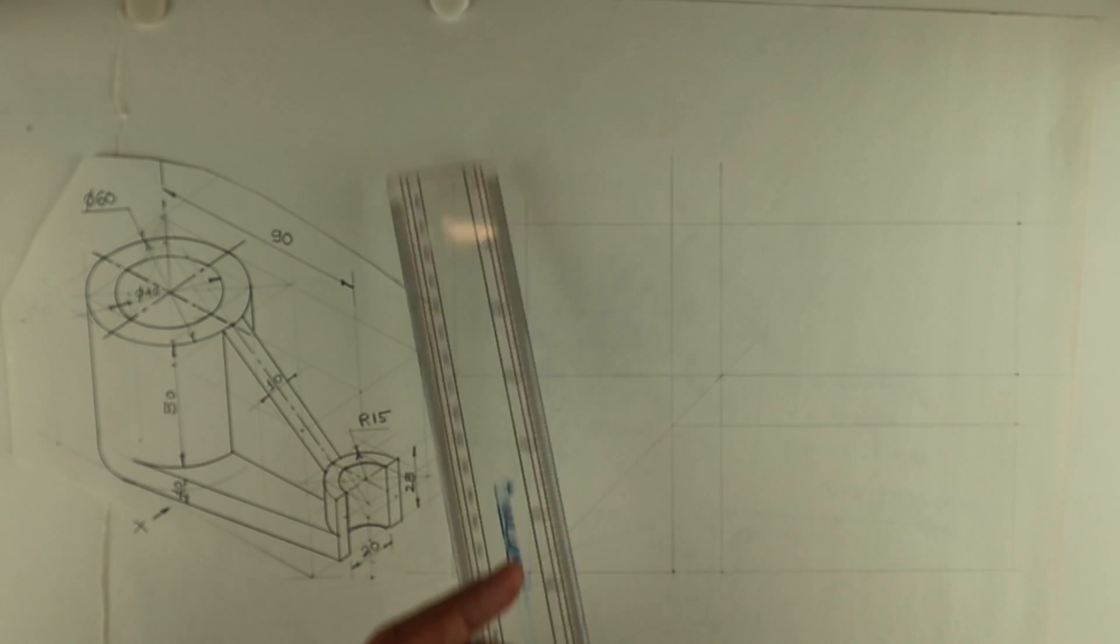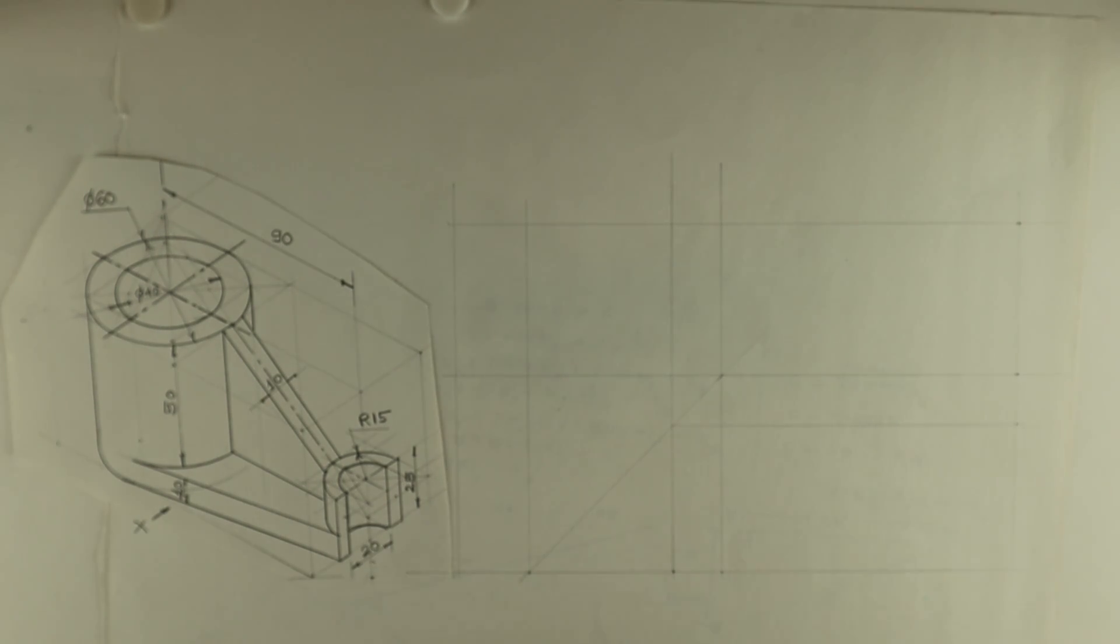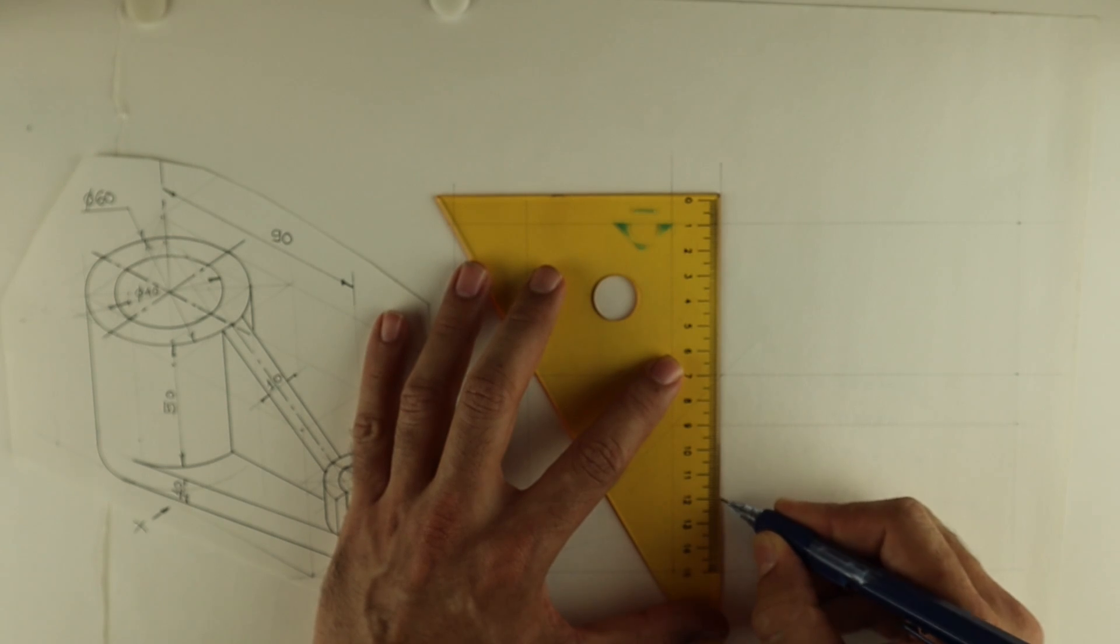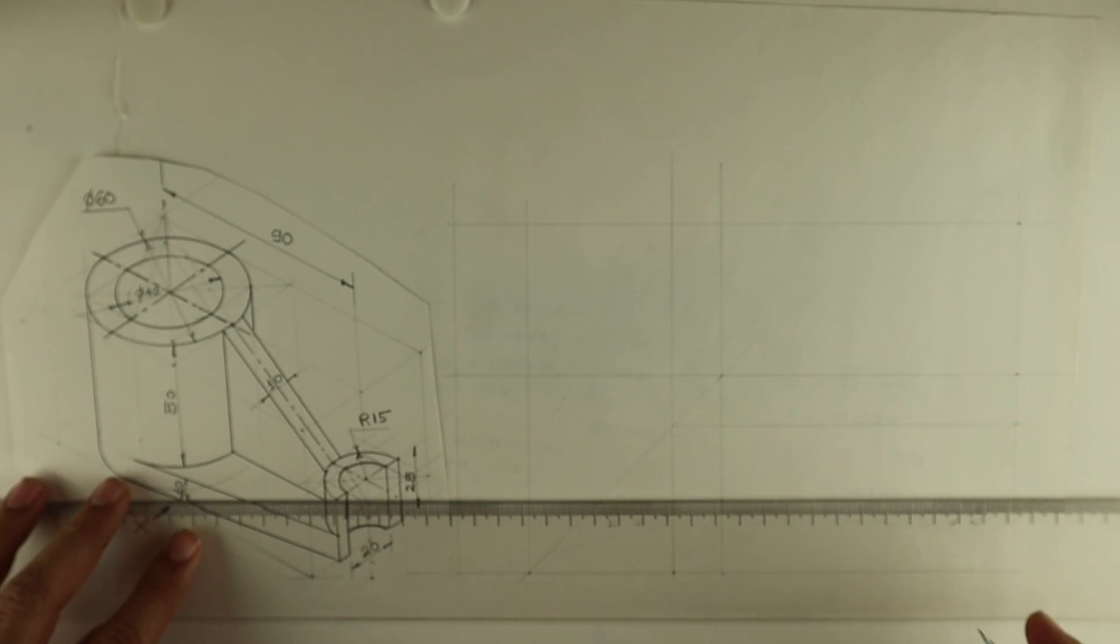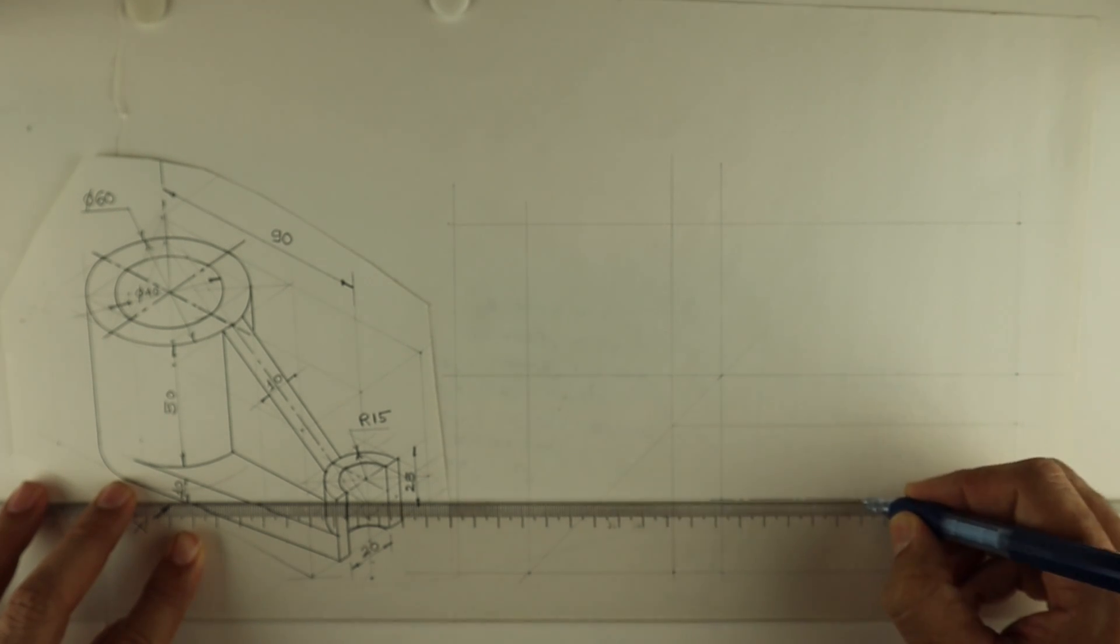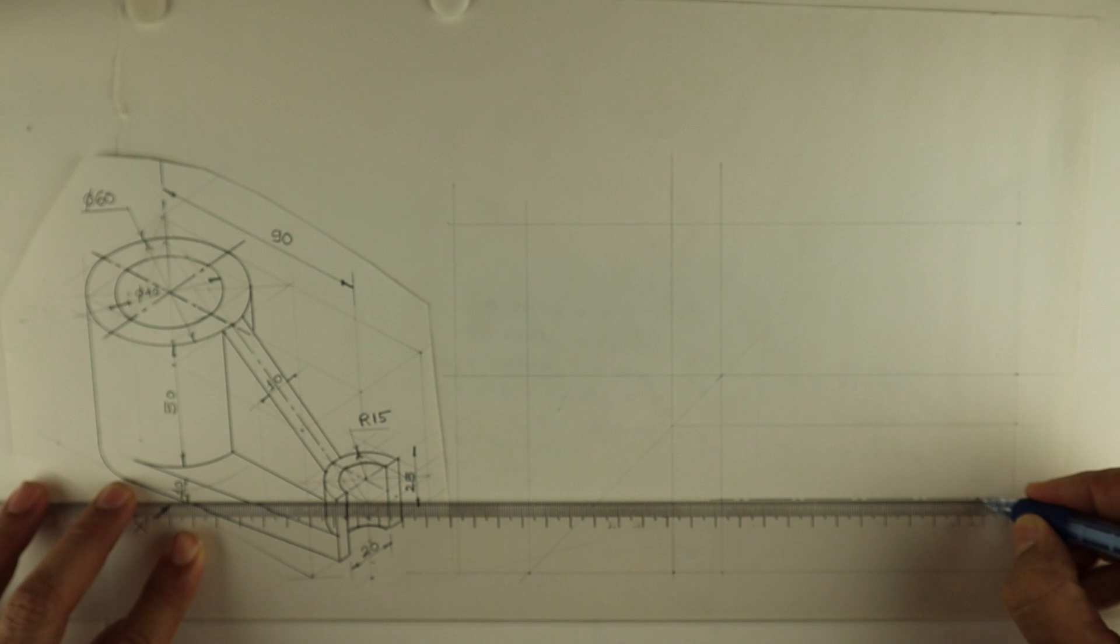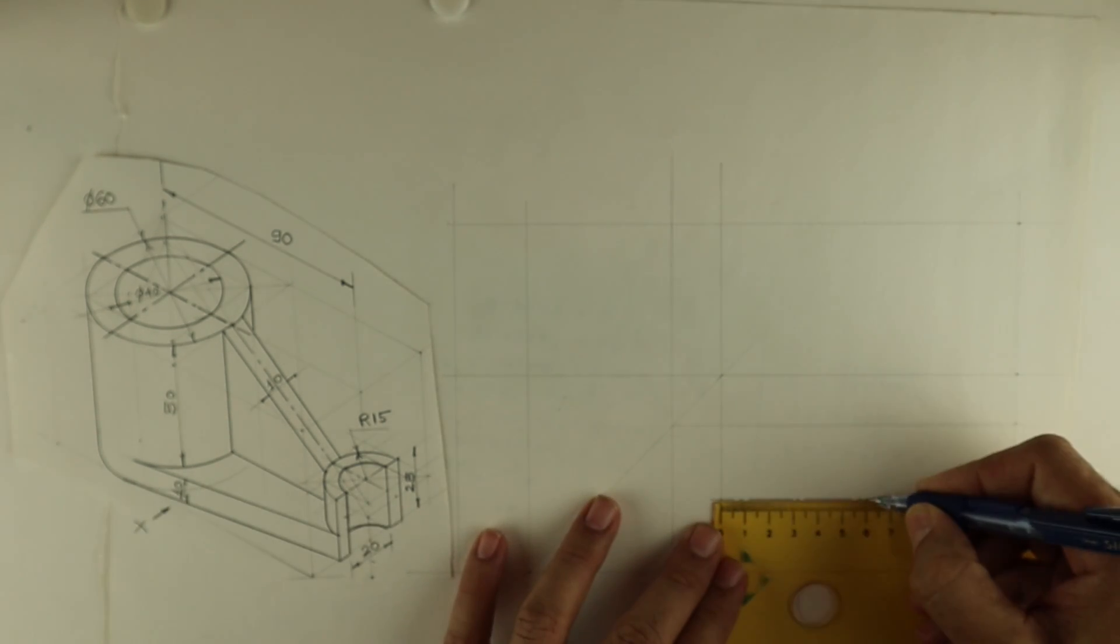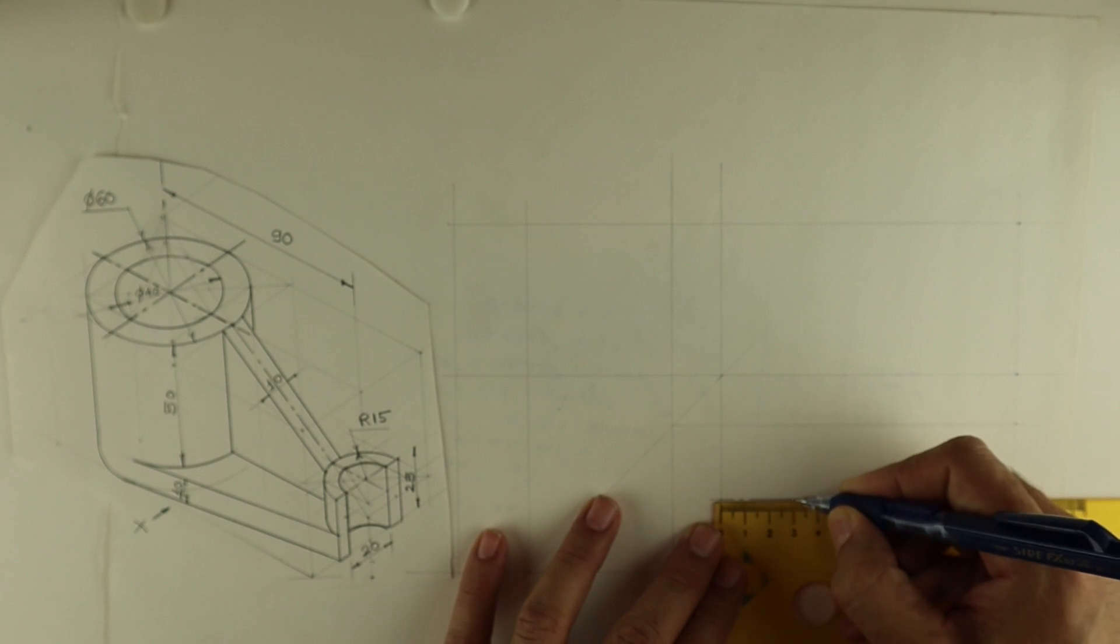First we will draw the layout and start with top view. Always remember it is advisable to start with a view which has circles. In orthographic we will start with the circle, so I will mark 30 and go inside by 30. I can draw the center line. The total is 60, I will mark 30.